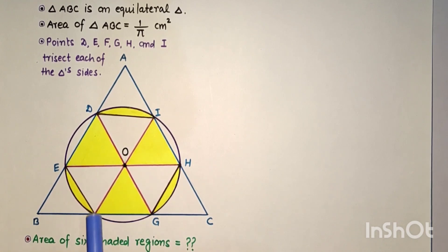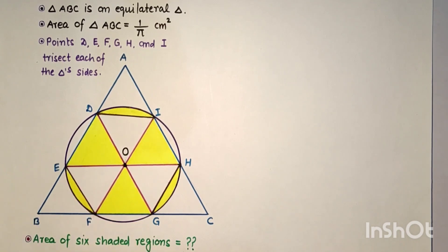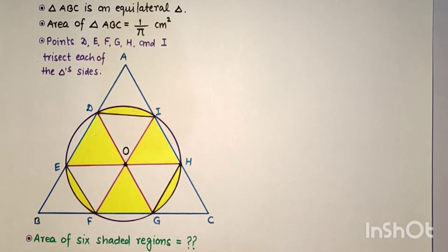which trisect each of the triangle's sides. That means AD = DE = EB = BF = FG = GC = CH = HI = IA, all are equal. We have to find this yellow shaded portion's area.